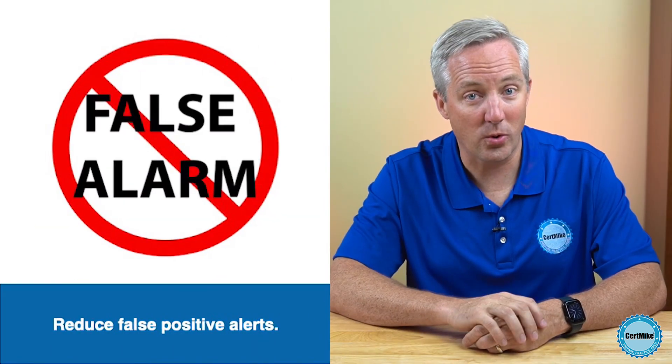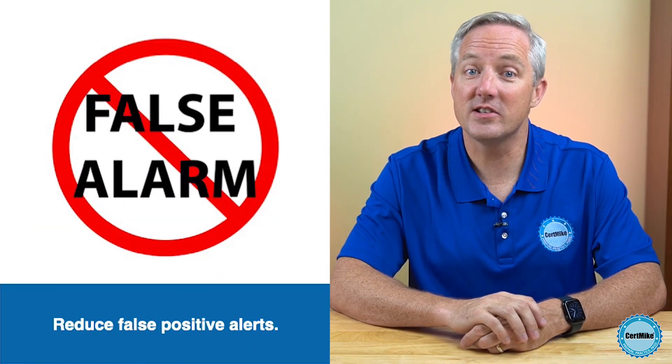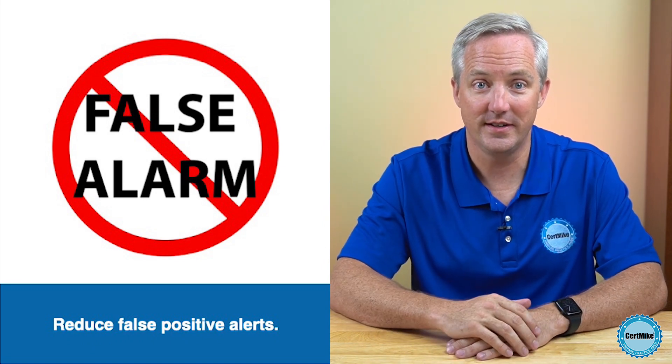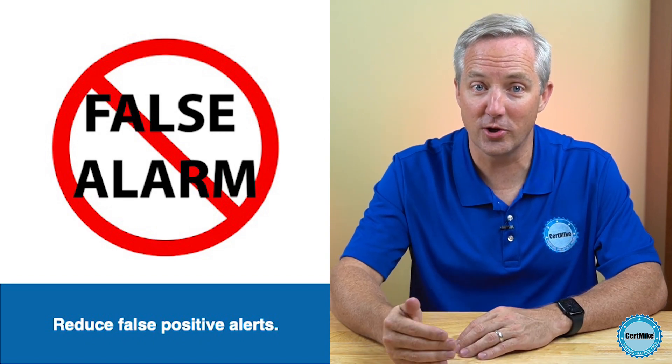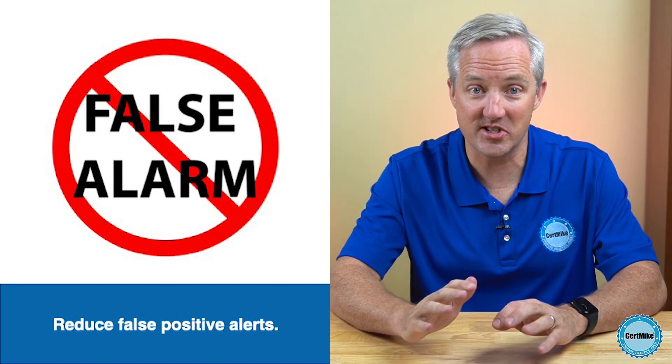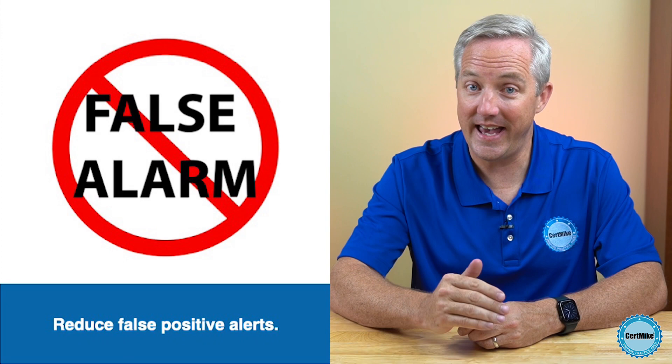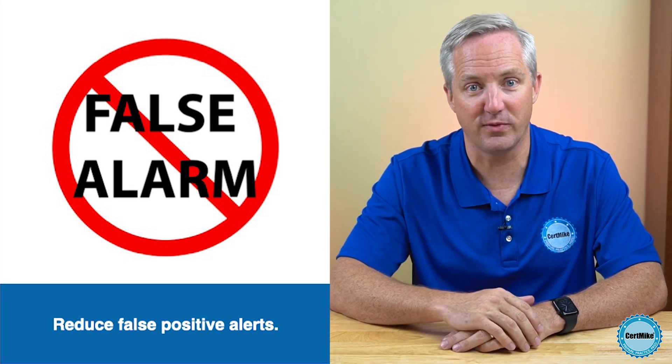Once you have your SIEM up and running, you'll need to tune it to perform well and meet your organization's security needs. This involves tweaking the configuration until the SIEM is functioning in a manner that provides useful information to security administrators without causing them unnecessary work. One of the most important tasks of tuning a SIEM is modifying the rules so that the SIEM doesn't trigger a large number of false positive alerts. False positives occur when the SIEM triggers an alert but there really is no undesirable activity taking place, and these false positive alerts waste the time of administrators and make them less likely to pay attention to future alerts.